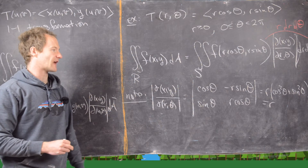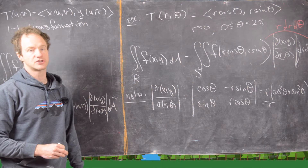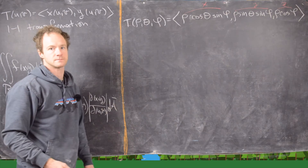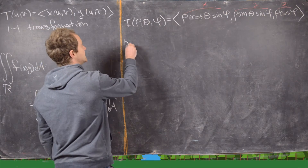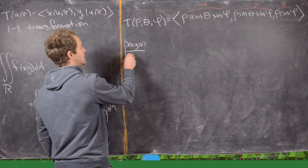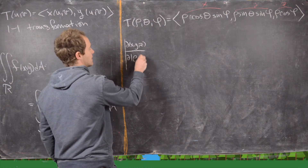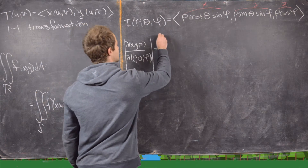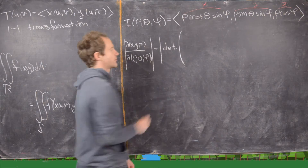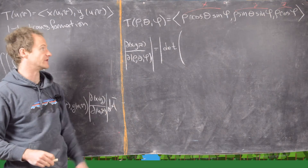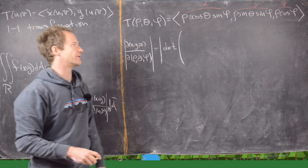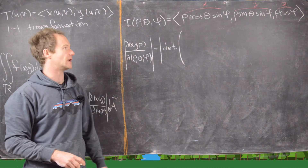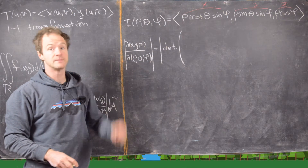We've regained that polar formula using this more general approach. Now we're going to do the same thing with spherical coordinates. We need to calculate the Jacobian dX,Y,Z / dρ,θ,φ, which is the absolute value of the determinant of the 3×3 matrix of all possible partial derivatives, where the first row is derivatives of X, the second row is derivatives of Y, and the third row is derivatives of Z, each with respect to ρ, θ, and φ.